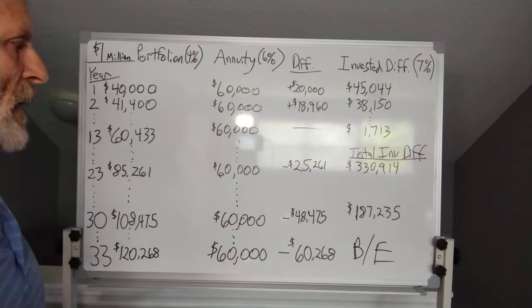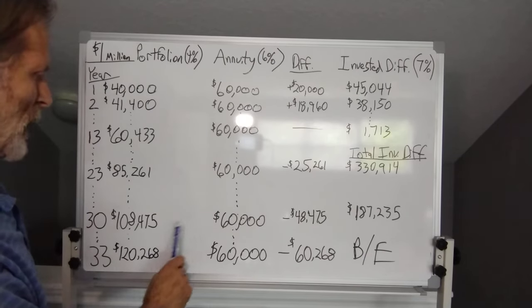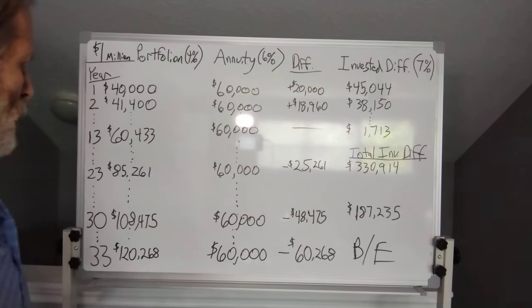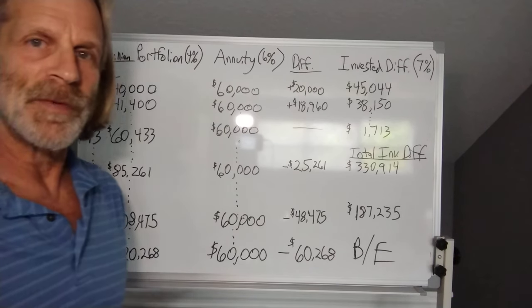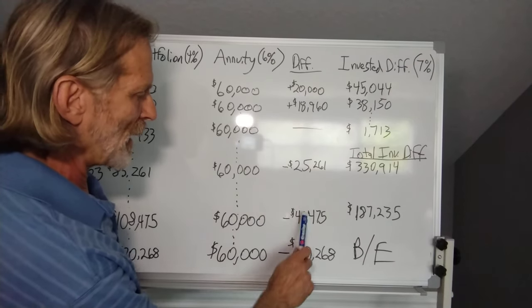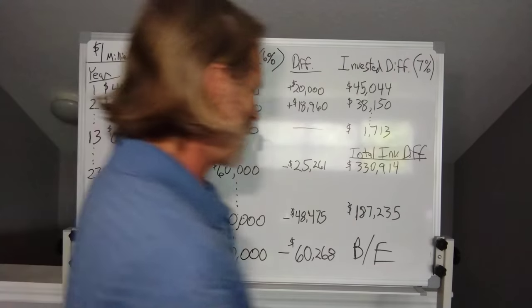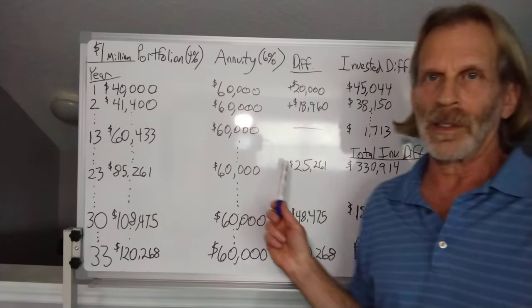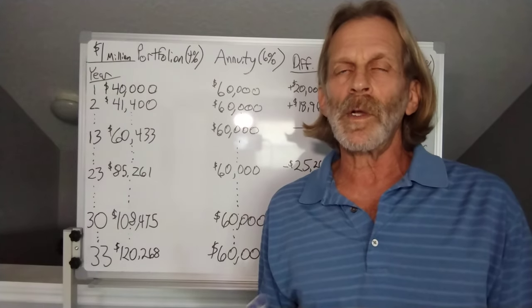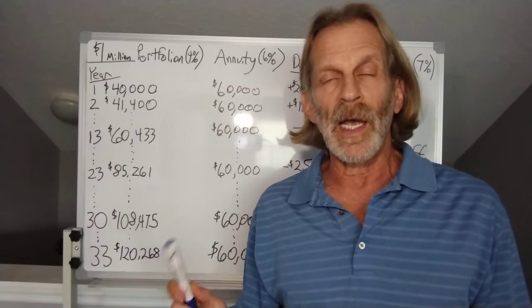After 23 years, you've drawn about that same amount from your annuity. As we go on, we're losing money each year to inflation. By year 30 — the typical standard retirement period — you're drawing $108,475 from your portfolio because of inflation, but still only getting $60,000 from the annuity. It's not until year 33 that you've spent all the accumulated difference down. So the portfolio and the annuity are equal over the lifetime at year 33.